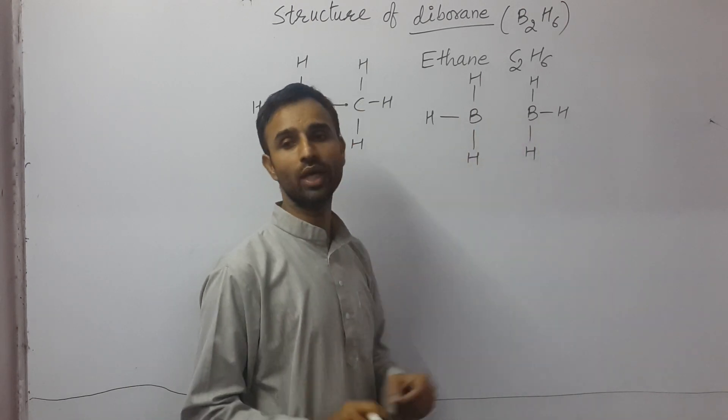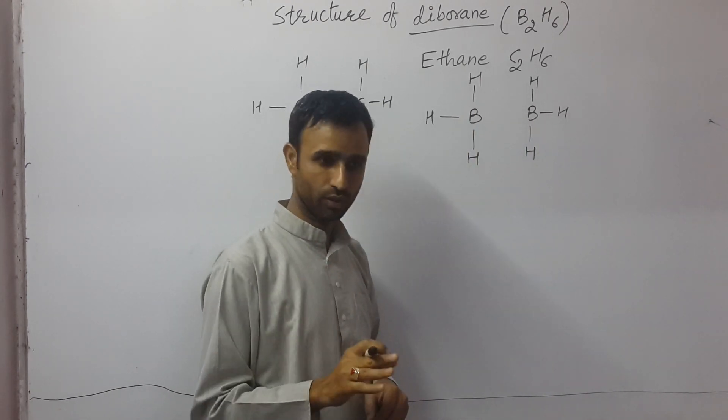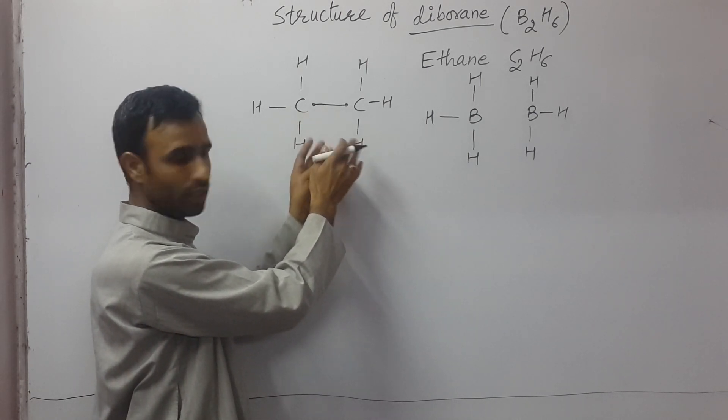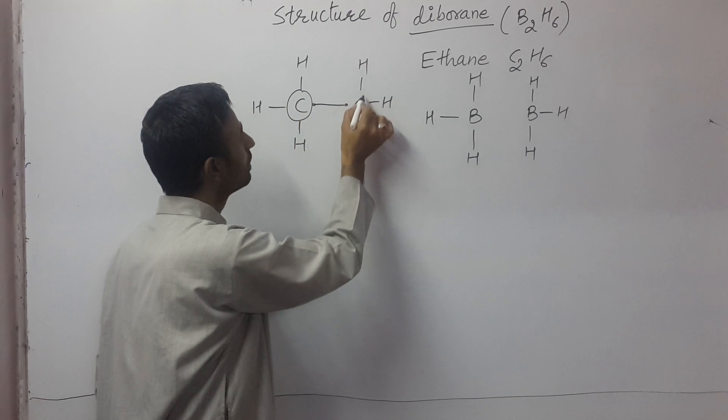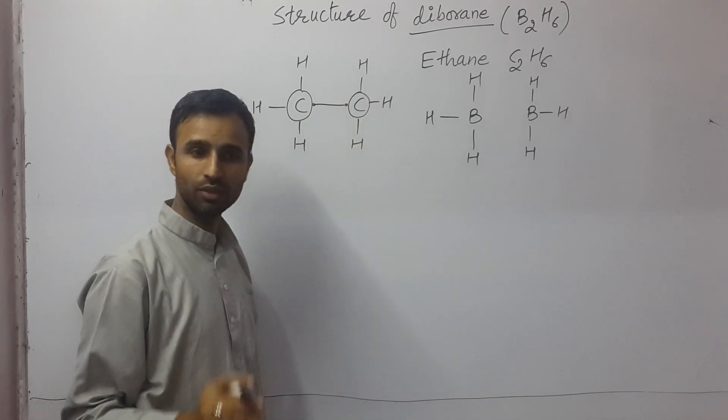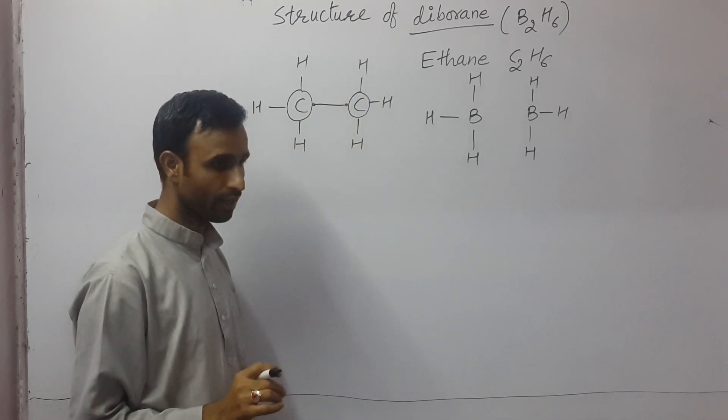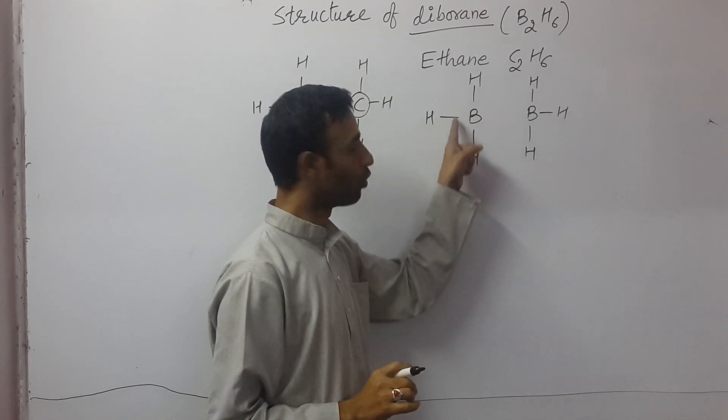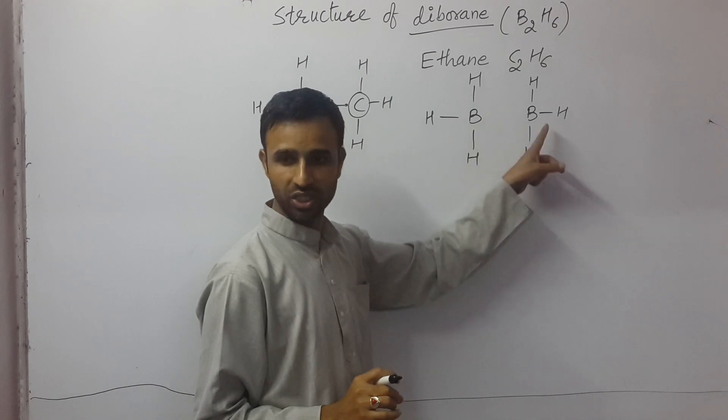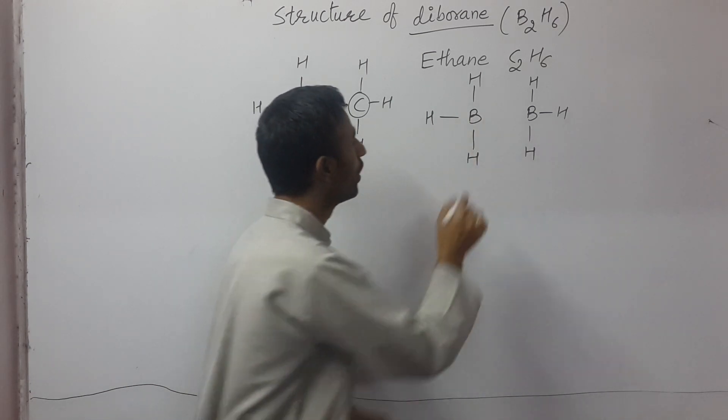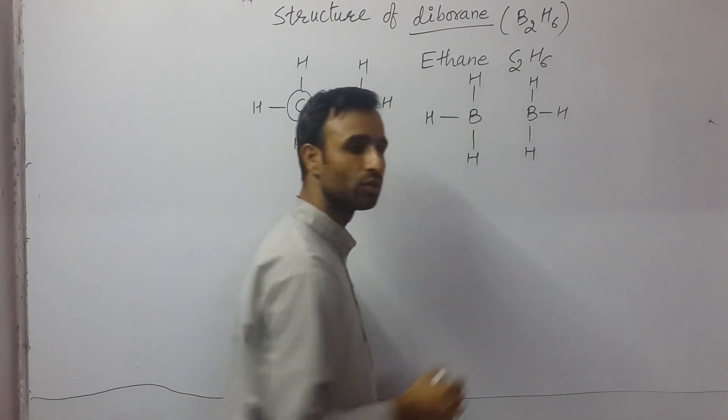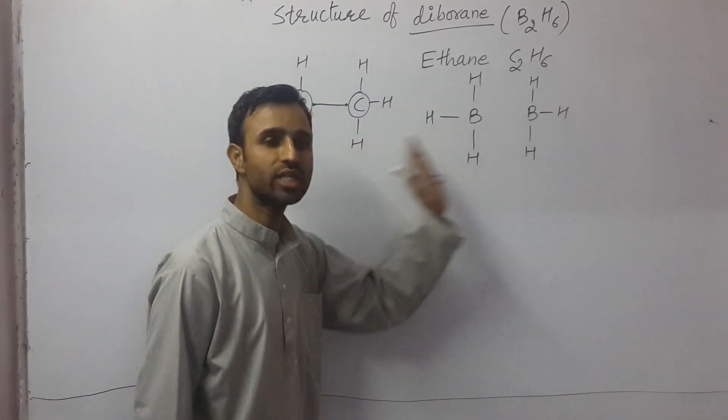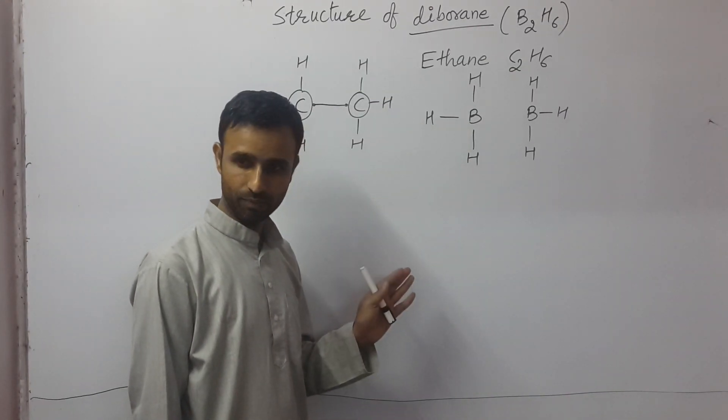So it is actually an electron deficient compound. And ethane is an electron precise compound. Each carbon has eight electrons. But here, each boron has three of its own and three are shared, so six electrons. So there is no electron left between two borons. That means its structure is not similar to ethane.